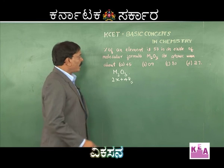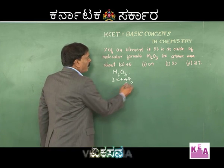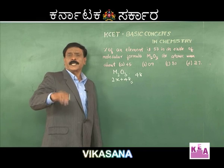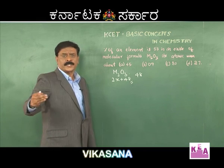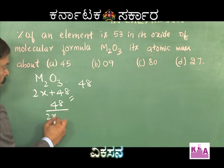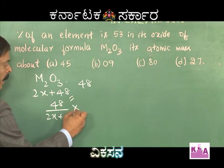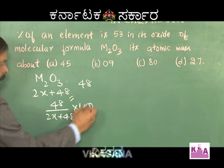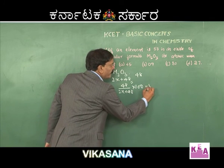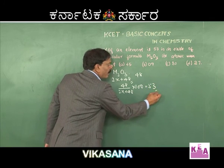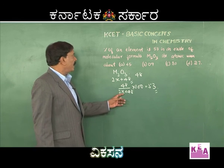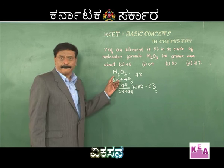In this oxide, the contribution of oxygen is 48. Therefore, the percentage of oxygen would be equal to 48 divided by (2x plus 48), into 100, and that is given as equal to 53 in the problem. Now we have to find out x, which is the atomic mass of M.